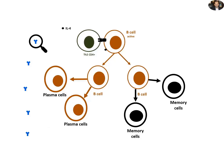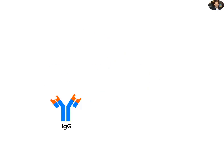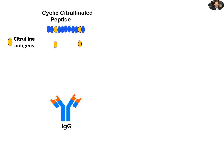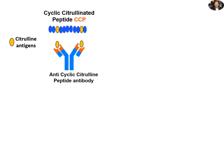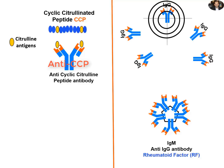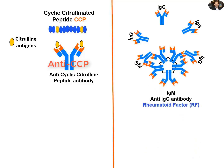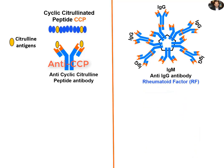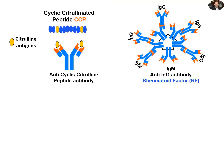The first type of antibodies are the IgG antibodies, which attack the cyclic citrullinated peptides, abbreviated as CCP. The anti-CCP antibodies are specific markers for diagnosis of rheumatoid arthritis. The second type of antibodies are the IgM antibodies, which attack our IgG antibodies — so they are antibodies against our own antibodies. They are called rheumatoid factor, and they are very common in the serum of patients with rheumatoid arthritis.